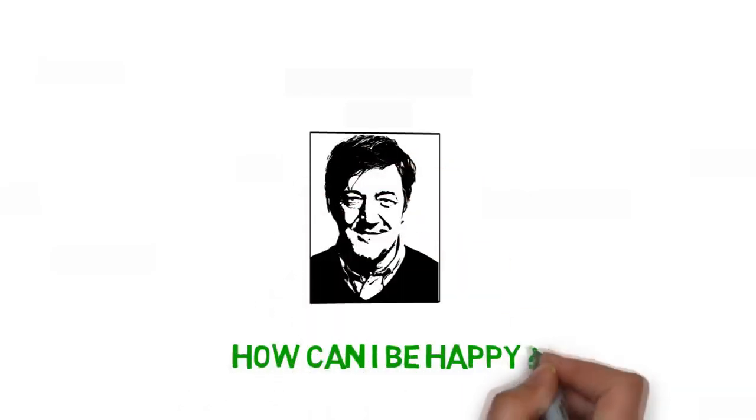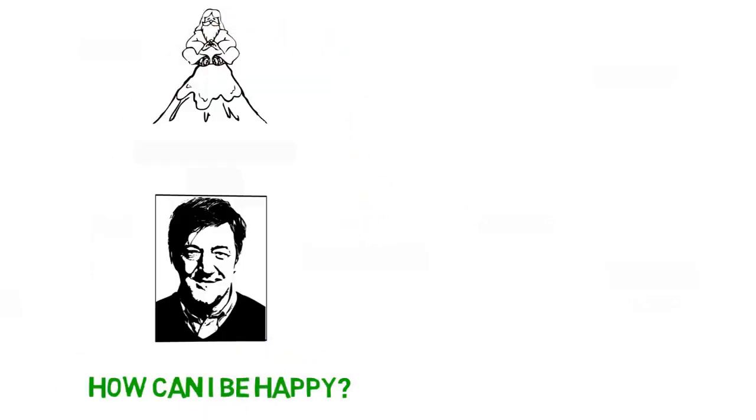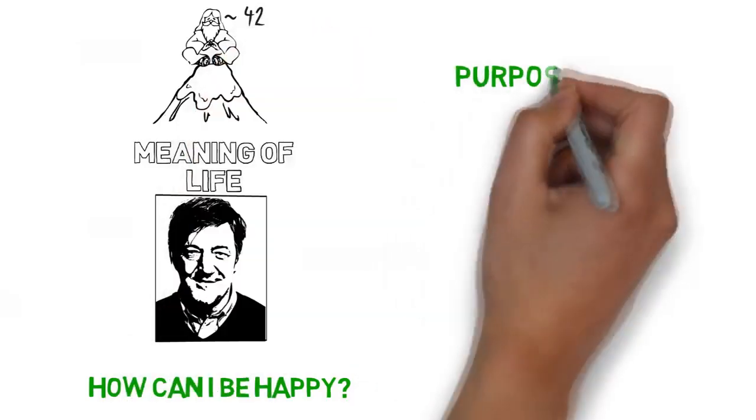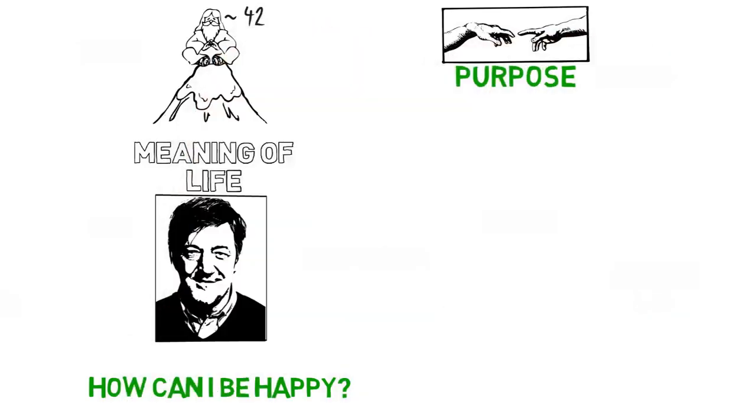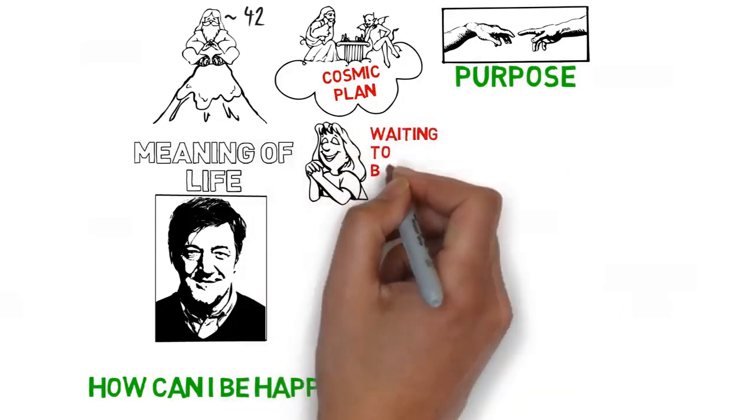How can I be happy? Some people believe that there is one single meaning of life. They think that the universe was created for a purpose and that human beings are part of some larger cosmic plan. They think our meaning comes from being part of this plan and is written into the universe waiting to be discovered.